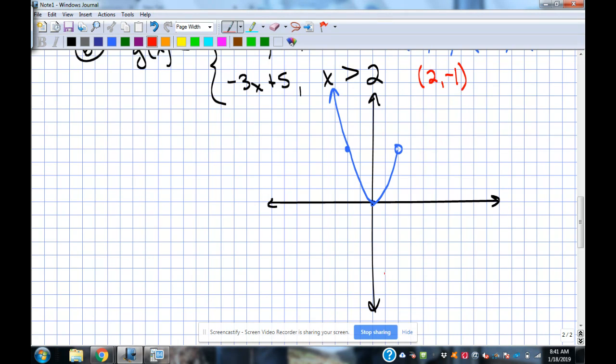And then, I'm just going to go to 2, negative 1. And should I put it open or filled in circle? Open again because it doesn't have the equal to mark.